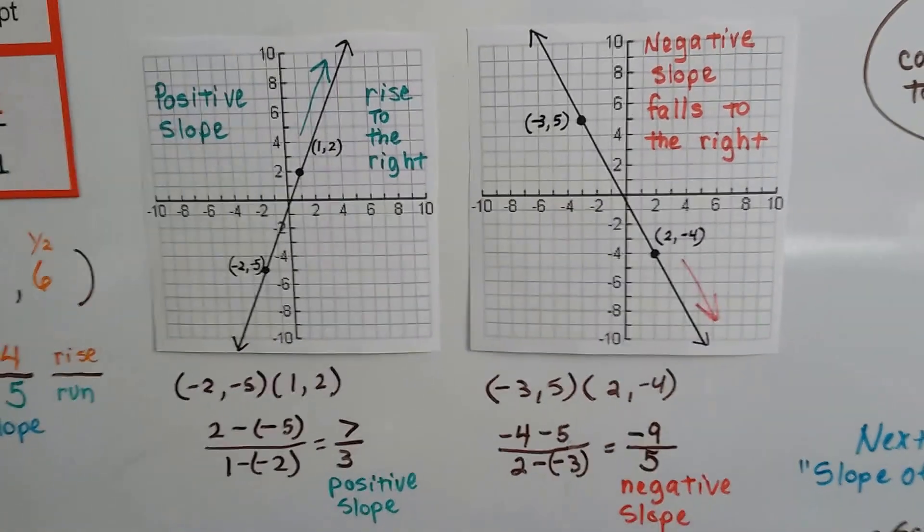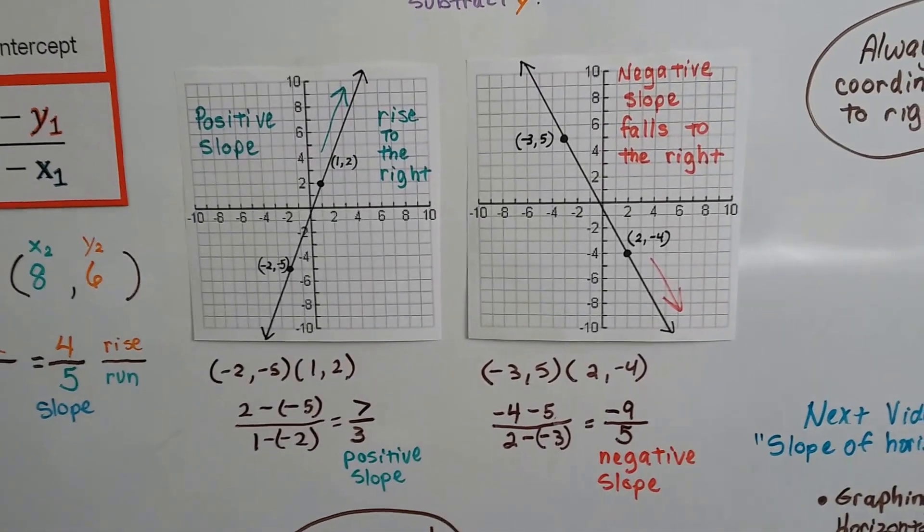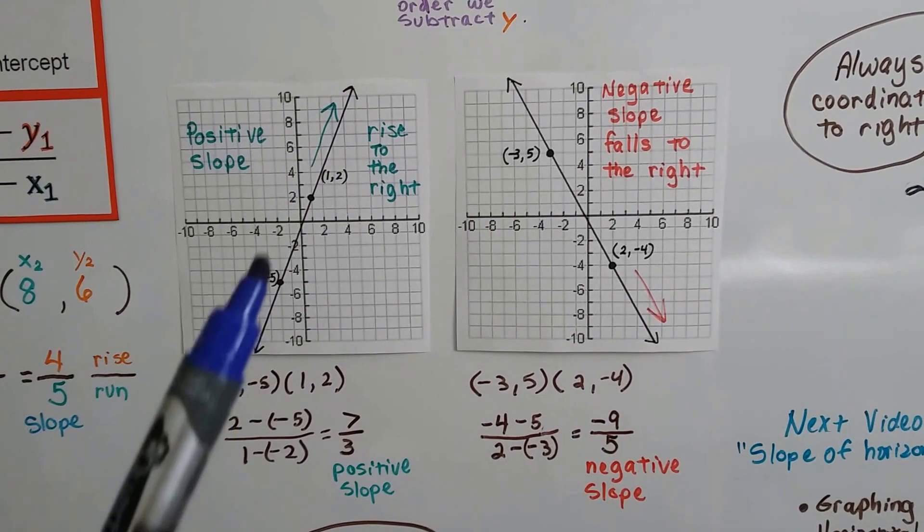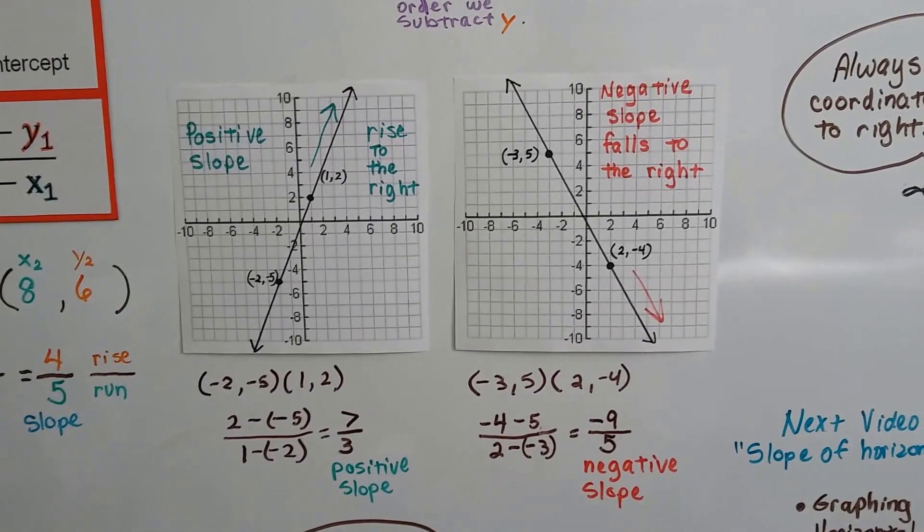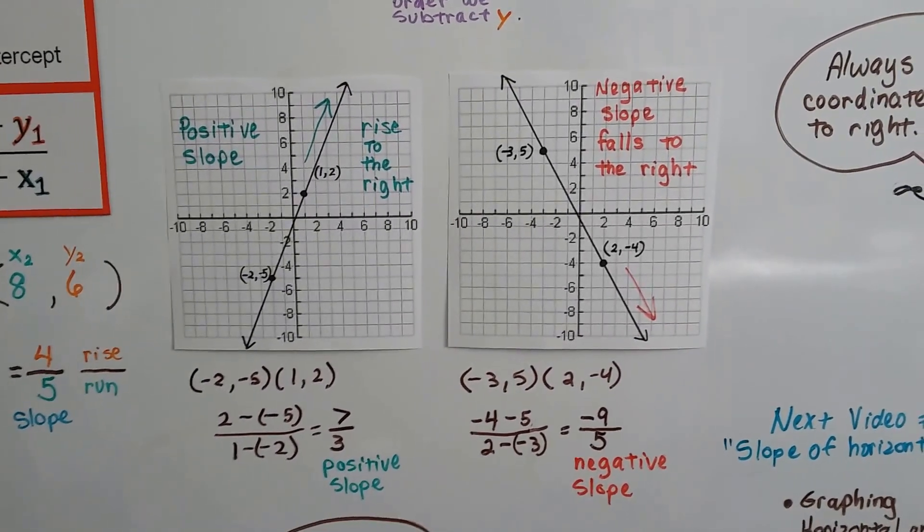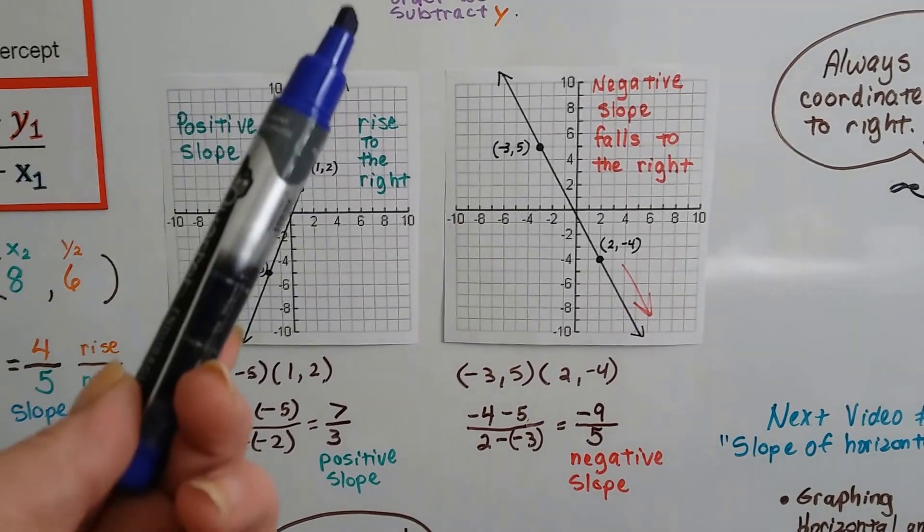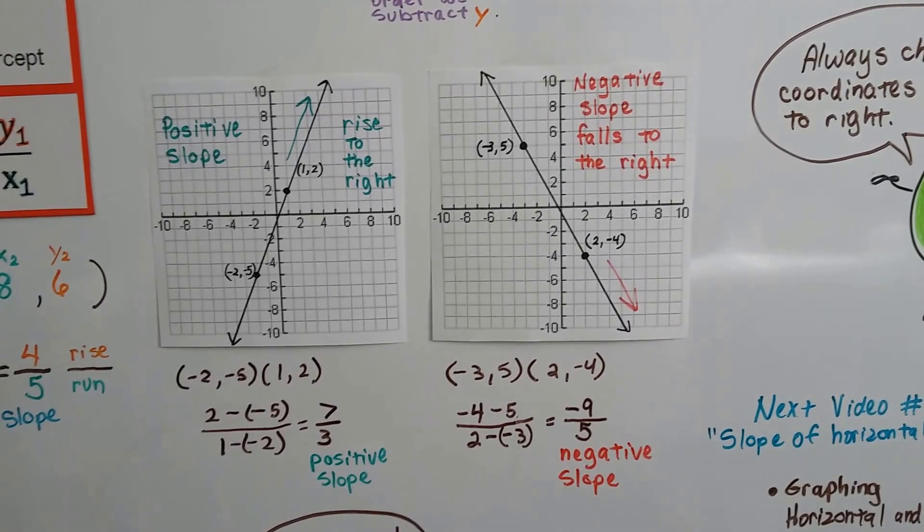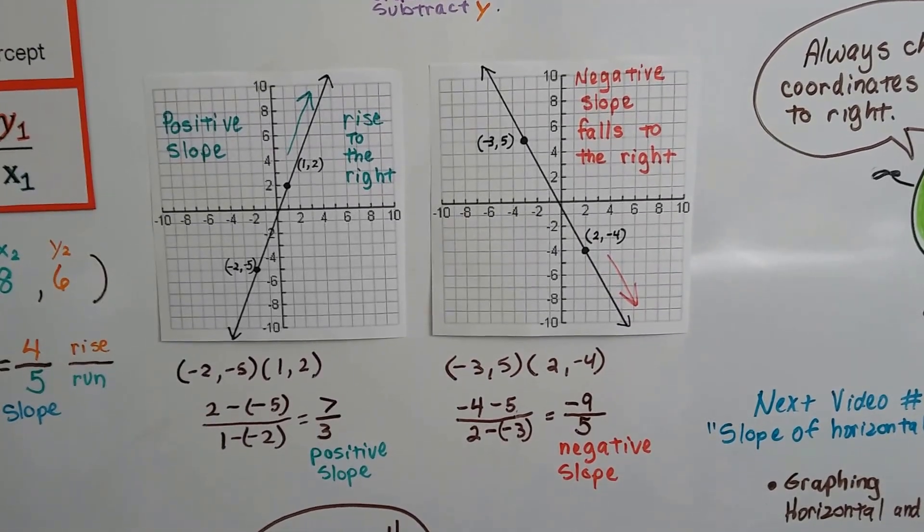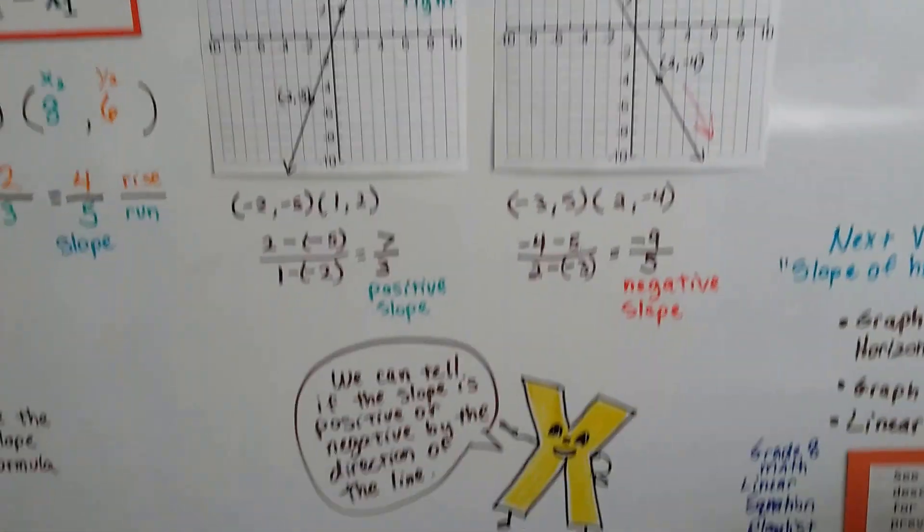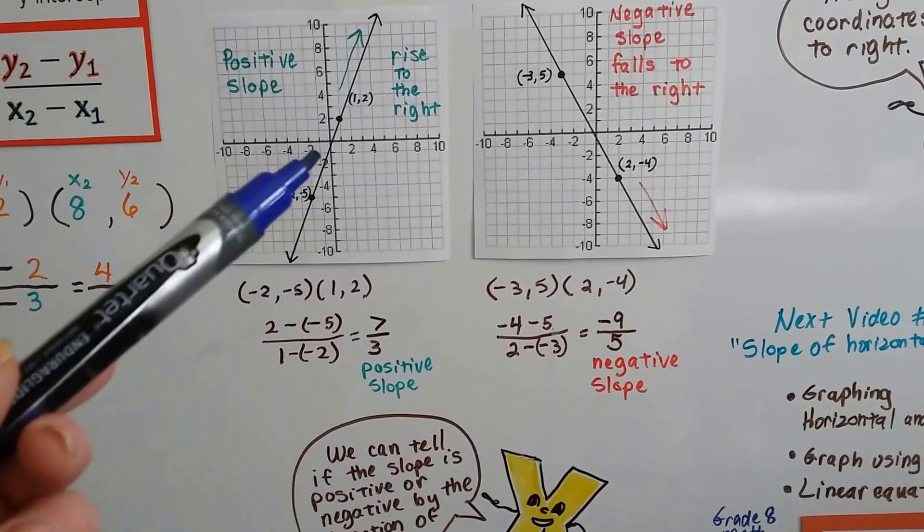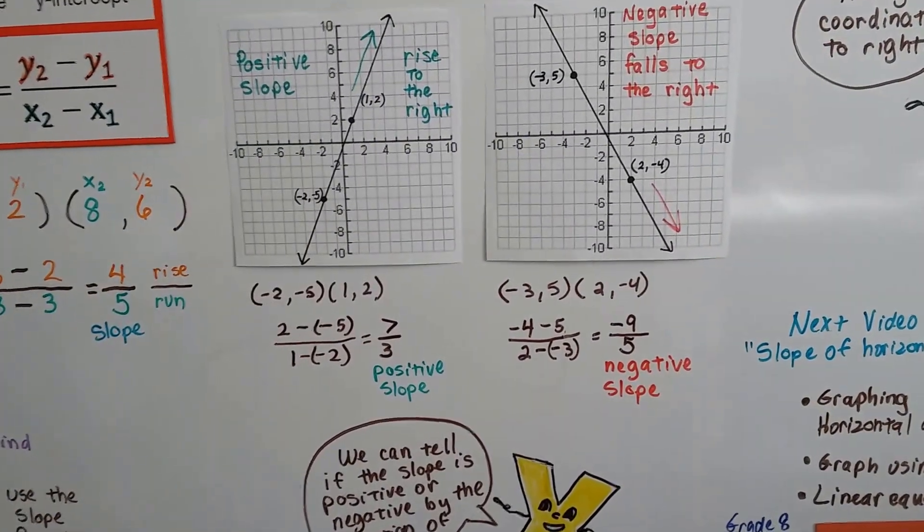So just by looking at these, you could tell somebody, your teacher or your classmates, I can tell if this is going to be a positive or negative slope just by looking at the line. If it's rising to the right, whatever the slope is, it's going to be a positive number. And if it's falling to the right, whatever the slope is, it's going to be a negative number. It's really cool. So just remember that. Just by the direction of the line, you can tell if the answer is going to be a negative or a positive number.